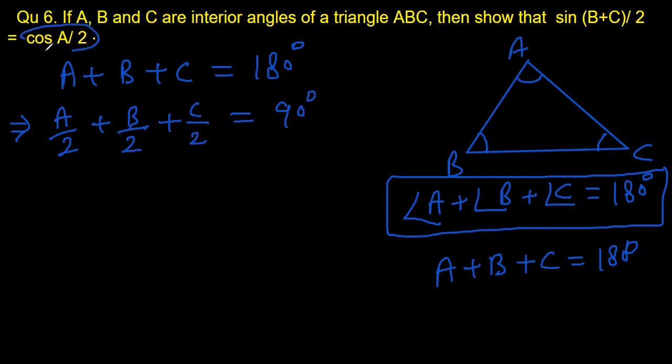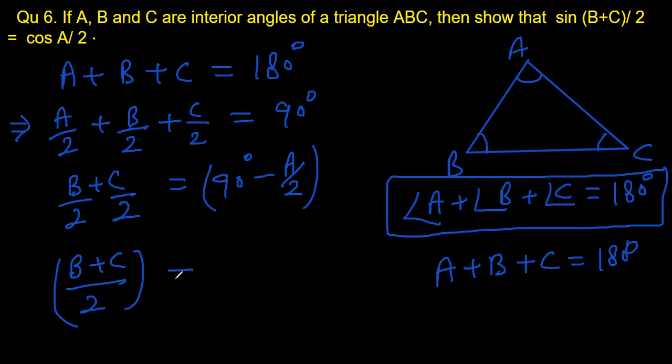As we see A is separate and B plus C are together, so we are going to do the same. Let's take A to the right. We get B by 2 plus C by 2 should be 90 degrees minus A by 2. Simply A by 2 is taken to the right. This thing gives us B plus C by 2, because you can take LCM on the left hand side, would be same as 90 degrees minus A by 2, and we are done.